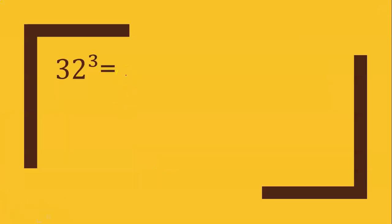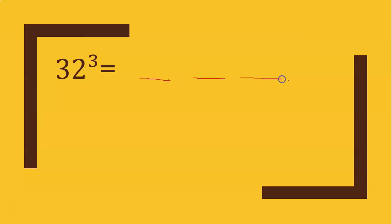The first question is 32 cubed. In the first step, we have 4 parts: 1, 2, 3, 4. Here we have 4 parts.